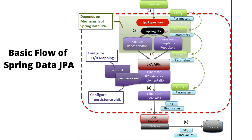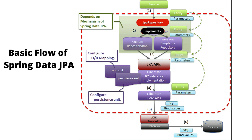The third step: Spring Data JPA internally uses JPA APIs. This means Spring Data JPA is just an abstraction layer on top of JPA to reduce boilerplate code. All the Spring Data JPA methods internally use JPA APIs in order to talk with the database.